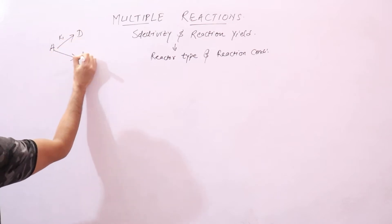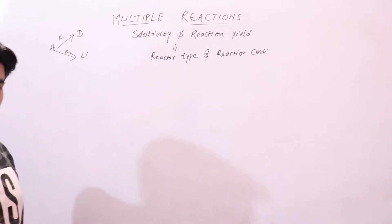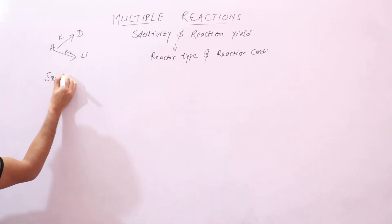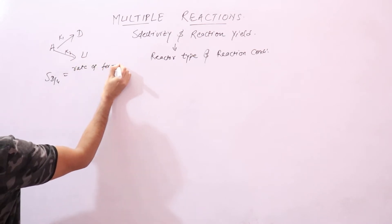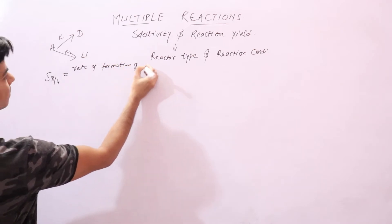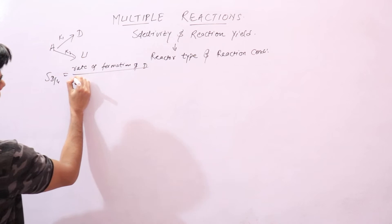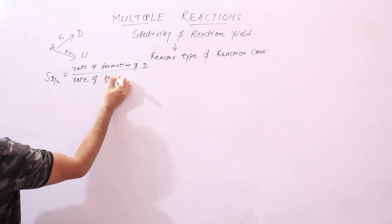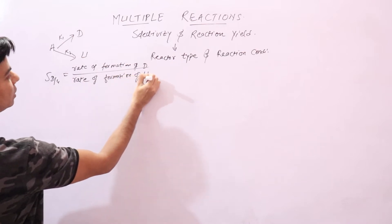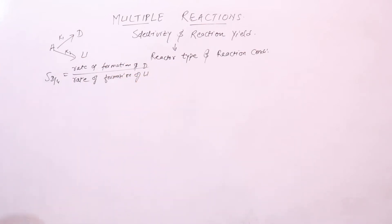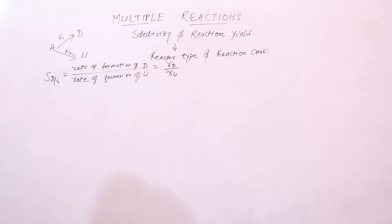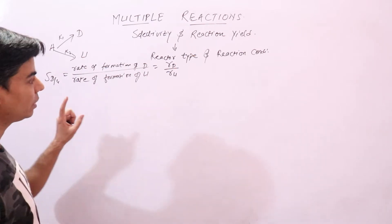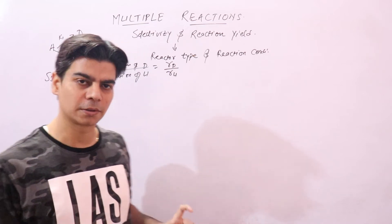Selectivity: suppose we have reactant A giving you a desired product and an undesired product through two different reactions. Selectivity would be the ratio of the rate of formation of the desired product divided by the rate of formation of the undesired product. This formula gives your instantaneous selectivity S_DU for the desired product D.